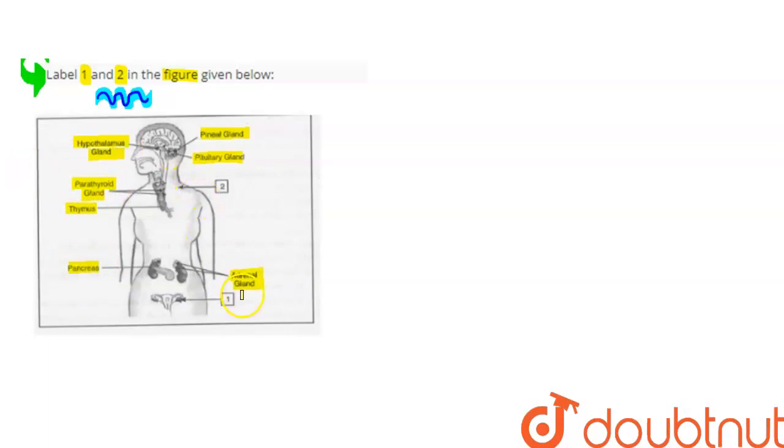So first let's talk about number one. Number one is labeling the ovary. The hormones which are produced from the ovary are estrogen and progesterone. These two hormones are secreted by the ovary.